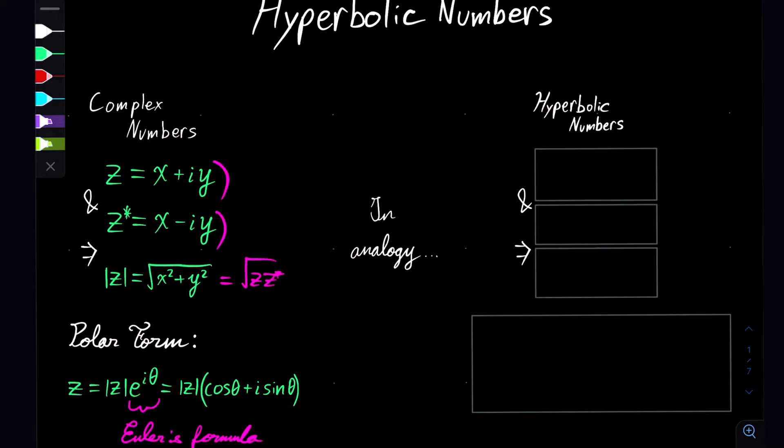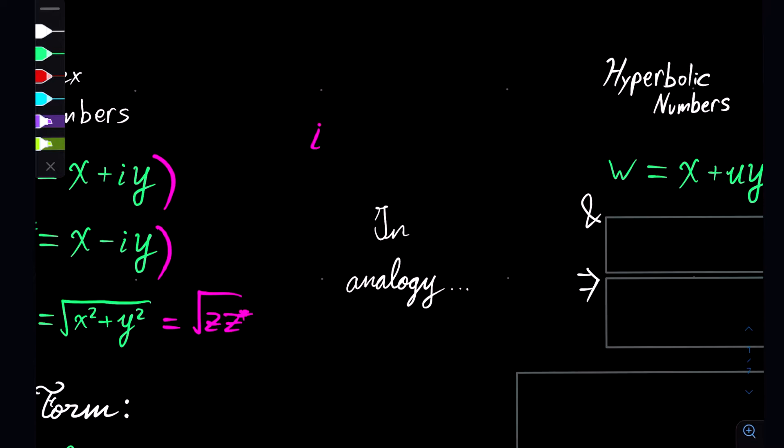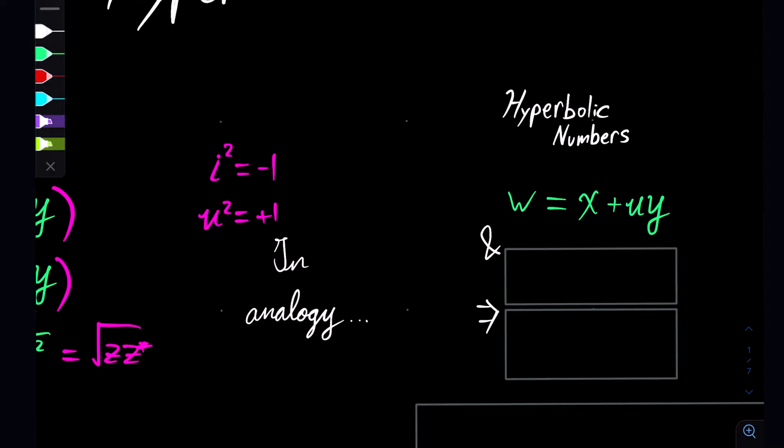In analogy to this, we start with the hyperbolic numbers w = x + uy, where instead of having the imaginary unit defined as i² = -1, we have u² defined as positive 1, where this is called a unipotent identity. But I will just refer to this as the hyperbolic unit. Note that we have u defined as the square root of positive 1, and that is a distinct mathematical entity from 1. These are not the same mathematical entity.